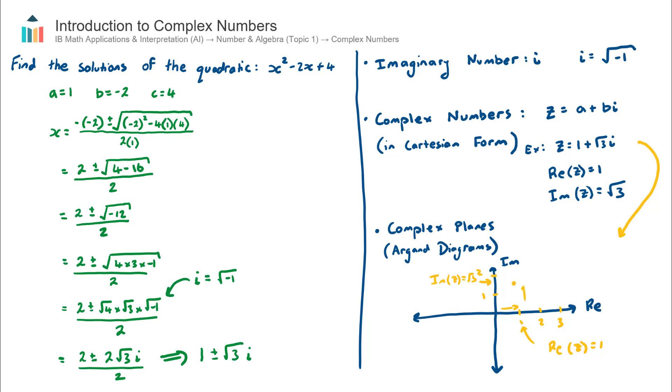So to plot this complex number on my complex plane I just go across to 1, I go up to √3, so it's going to be right about here, and I can represent that as a vector starting from the origin.